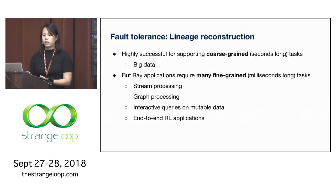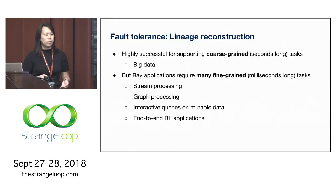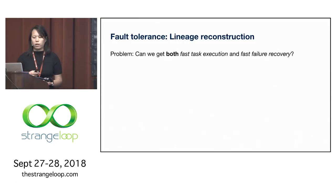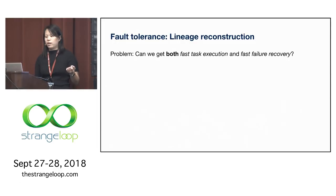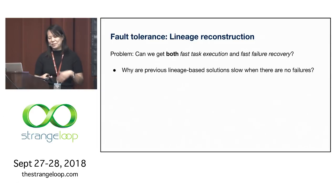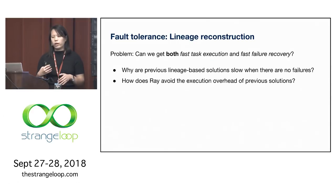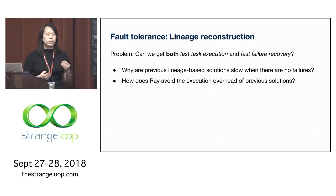If you have an application where each task takes only a millisecond to run but the system adds 10 milliseconds of scheduling delay per task, that's already a 10X overhead added by the system. The goal is to see whether Ray can get both fast task execution when there are no failures and fast recovery when there are failures. We'll first show why previous lineage-based solutions end up being slow when there are no failures.